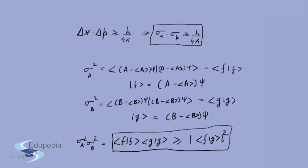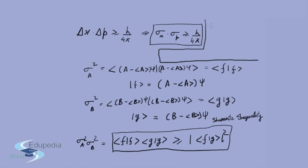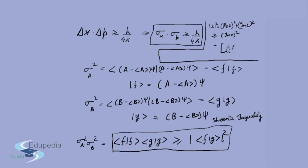Another inequality we'll use is one generally used for complex numbers: for any complex number Z, mod Z squared equals the real part of Z squared plus the imaginary part of Z squared, which is obviously greater than or equal to just the imaginary part of Z squared. And the imaginary part of Z equals one over 2i times (Z minus Z star). So mod Z squared is greater than or equal to that quantity for any complex number Z.